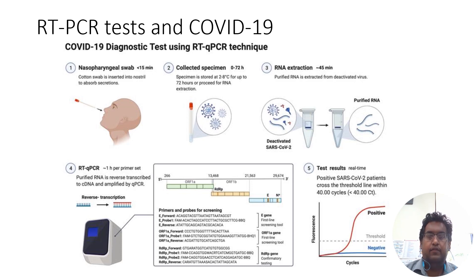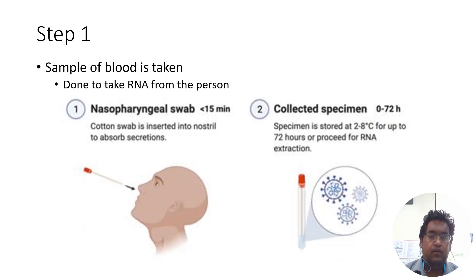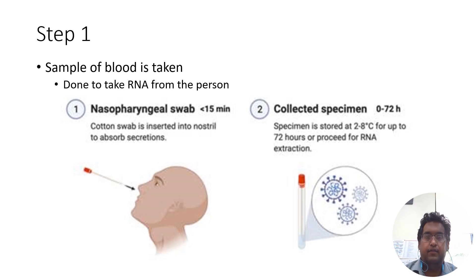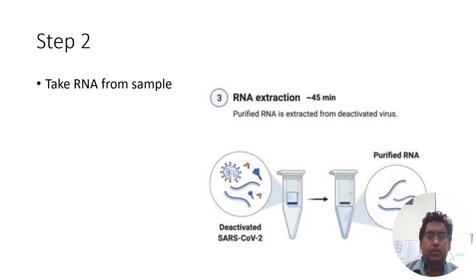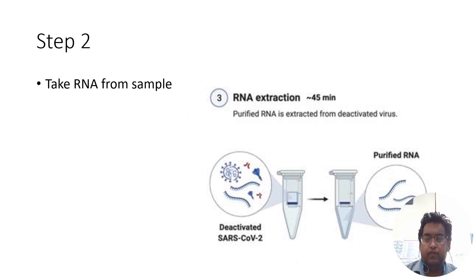The first step is to take a sample of RNA from the person. The most common way is through a nasopharyngeal swab, which is inserted into the nose. Afterwards, the specimen is collected, and then we take that sample and purify it, which means we remove any contaminants or debris it may have.